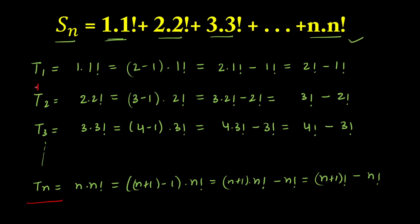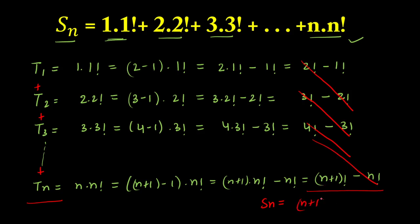If you add all the terms t₁ + t₂ + t₃ + … + tₙ, you get S(n). On the right-hand side, it becomes a telescopic series: 2! and −2! cancel, 3! and −3! cancel, and so on — everything cancels out. In the end, you are left with (n+1)! − 1!. So our final answer is S(n) = (n+1)! − 1!. That will be all for this question — thank you.